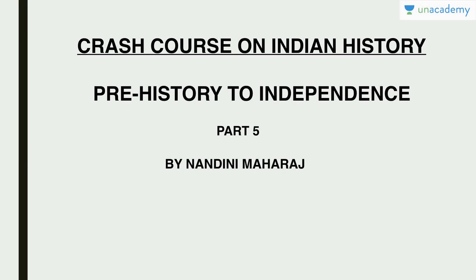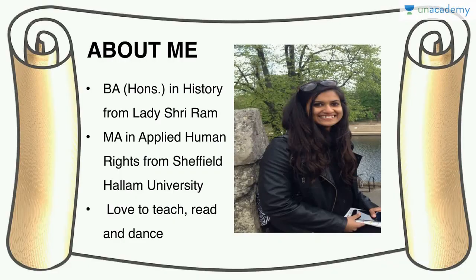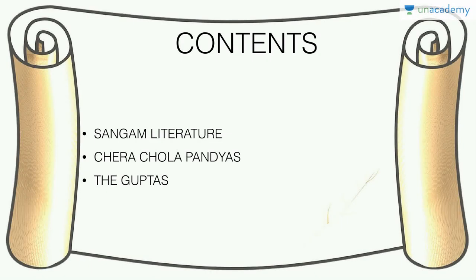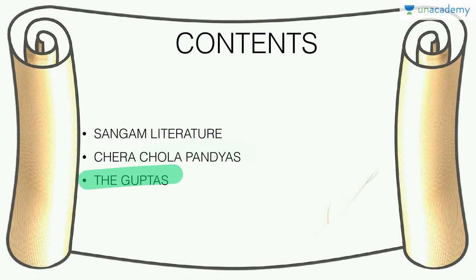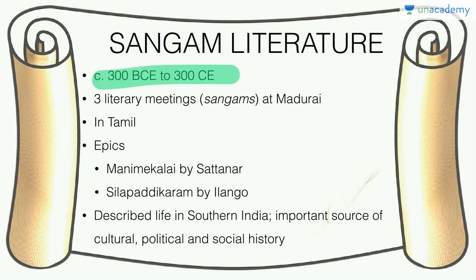This is the fifth part of the course, Crash Course on Indian History from Prehistory to Independence. In this lesson, we'll be talking about Sangam literature, the Cheras, Cholas, and Pandyas, and the Guptas — all very important kingdoms and themes in Indian history. Sangam literature was written around 300 BCE to 300 CE — a formation period of about 600-700 years.